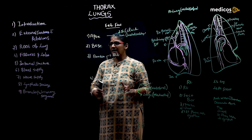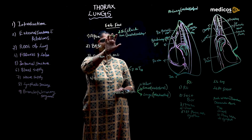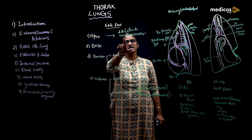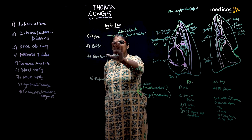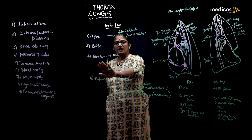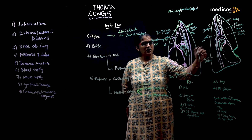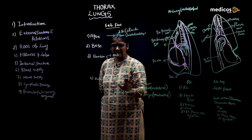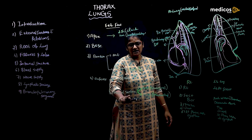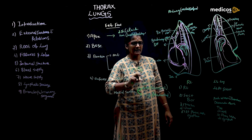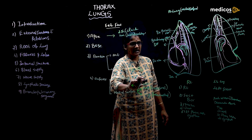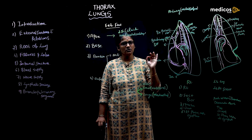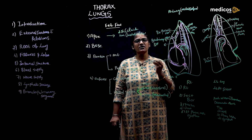To summarize: we have completed the external features and relations. The apex is 2.5 centimeters above the clavicle and 5 centimeters above the first costal cartilage. The base is related to the diaphragm. The left anterior border has the cardiac notch and lingula. The posterior border is rounded, extending from C7 to T10. The costal surface is related to the thoracic wall. The medial surface is divided into the vertebral part and the mediastinal part with the hilum.